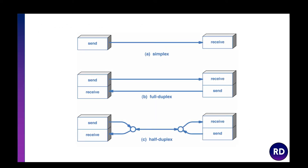Looking at the example on screen: with simplex the sender just sends and the receiver receives. With full duplex we're sending and receiving at the same time. With half duplex the connection alternates, so we can send data but not whilst we're receiving data.